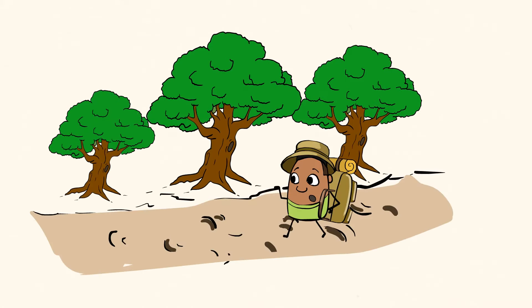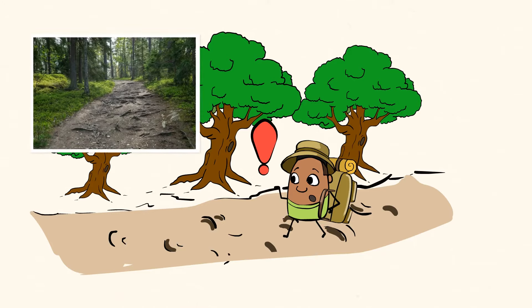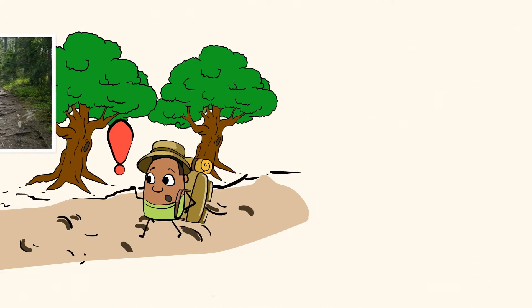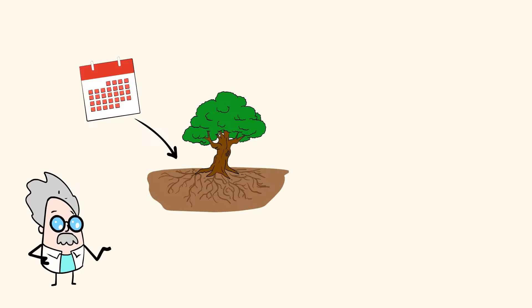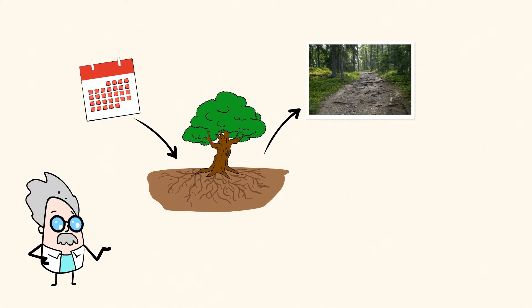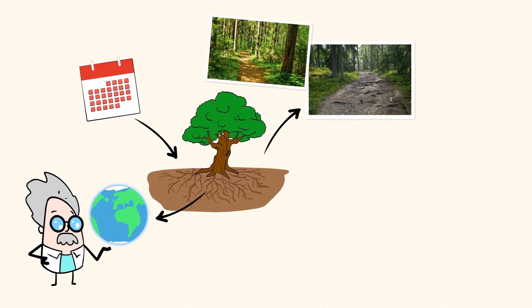Have you ever been walking on a path and had to watch your step very carefully because there are lots of bumps that you could trip over? The older a tree is, the more roots it has. These roots spread through the earth, making big changes to the soil. Think about how different this trail would look if the roots weren't there.